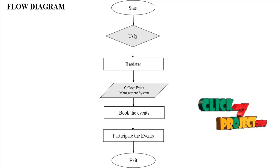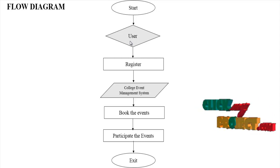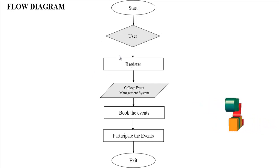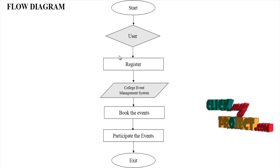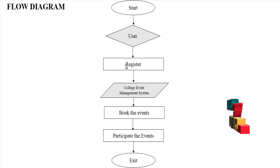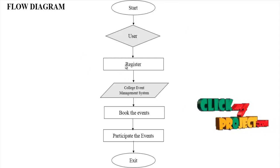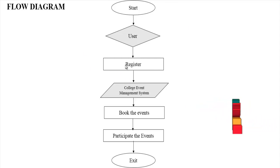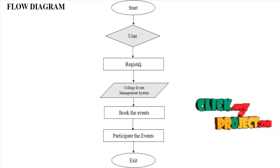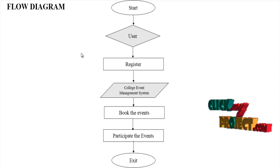First, the user can visit our application. If the user wants to access our application, they first need to register on our page. The user can enter their name, email, ID, branch, college name, and so on, then enter the credentials to register the page. Then, the user can access our URL.